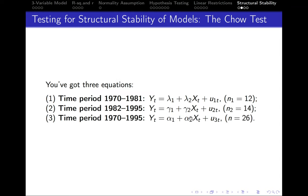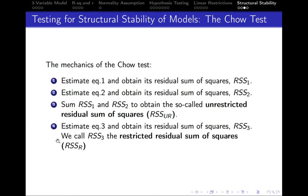After this, we estimate the third equation, so our entire sample, and obtain its residual sum of squares. We can call this residual sum of squares as the restricted residual sum of squares.